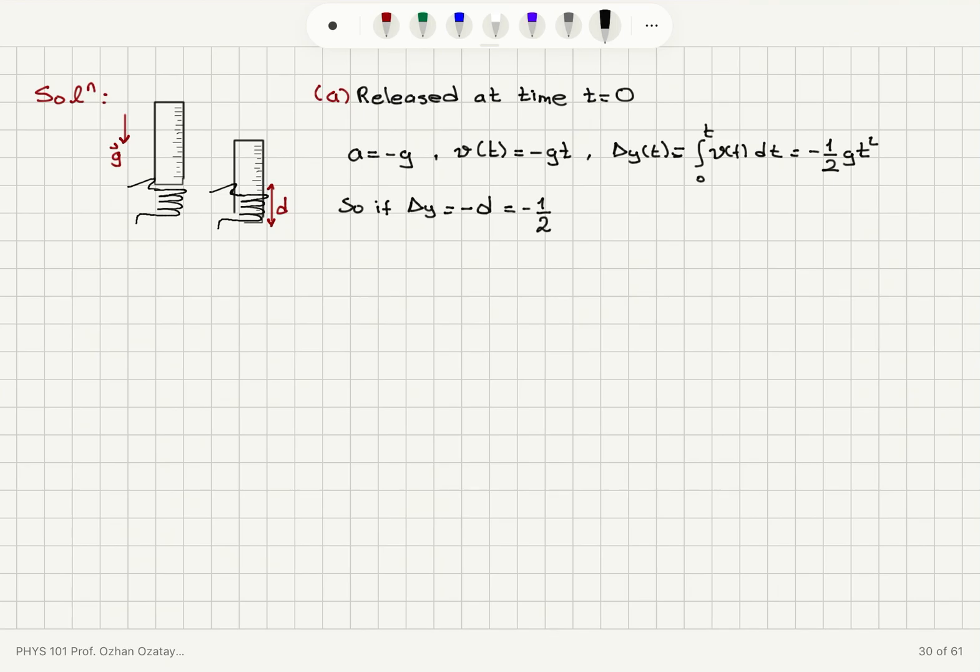This gives me for the reaction time square root 2d divided by g, the gravitational acceleration, which is square root 2d over 9.8 meters per second squared, or square root d over 4.9.